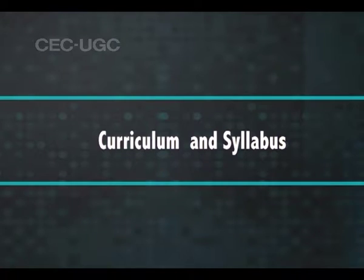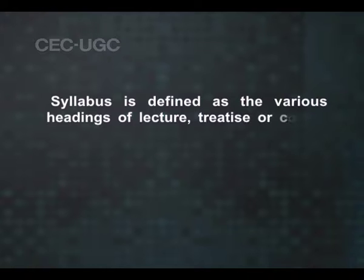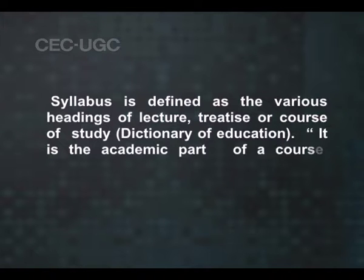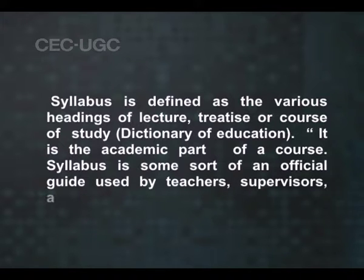Curriculum and syllabus. We have understood curriculum as the sum total of all the activities that the institution offers for the realization of educational goals. Let us see how curriculum is dependent on syllabus. Syllabus is defined as the various headings of lecture, treatise or course of study — dictionary of education. It is the academic part of the course. Syllabus is some sort of an official guide used by teachers, supervisors and administrators. The syllabus of the course presents the areas of study for a class or an instructional group.